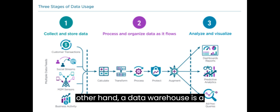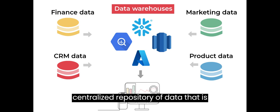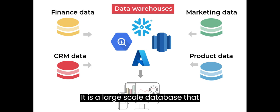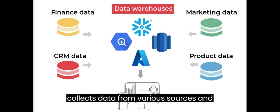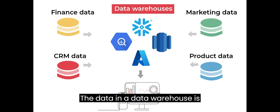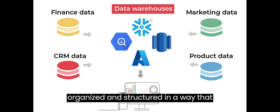On the other hand, a data warehouse is a centralized repository of data that is used for reporting and analysis. It is a large scale database that collects data from various sources and consolidates it into a single location. The data in a data warehouse is organized and structured in a way that makes it easy to query and analyze.